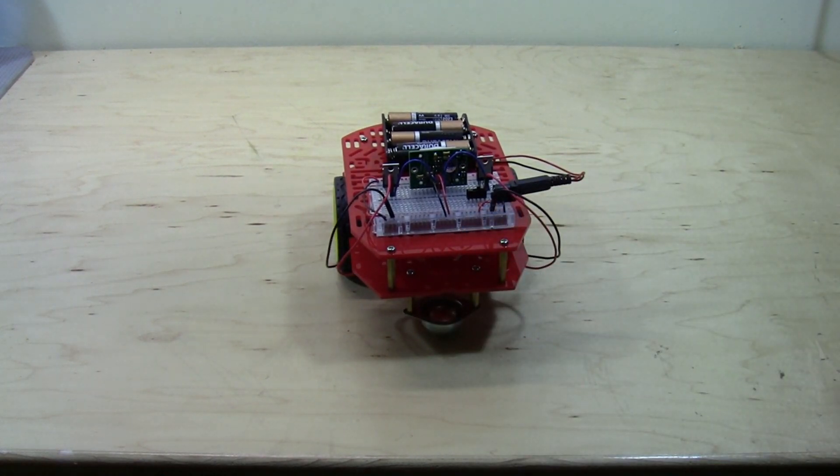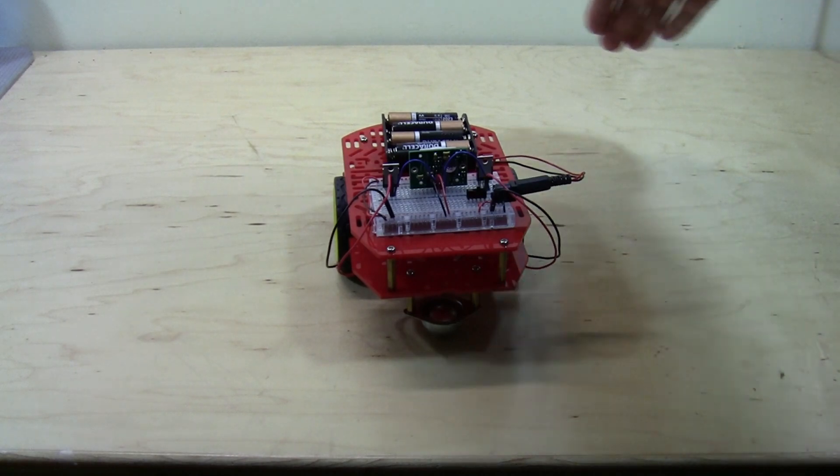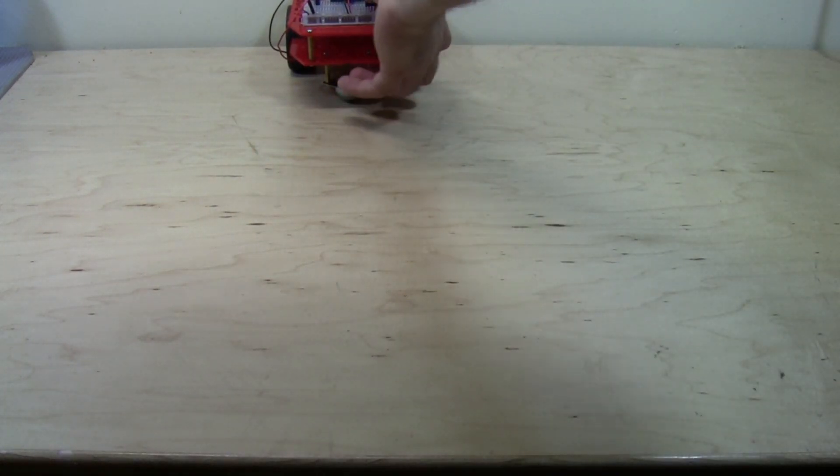Now the robot will wait to move until it detects motion. You can see that when I move my hand in front of the robot, it automatically drives forward.